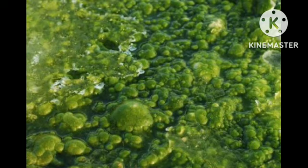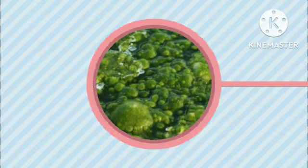Thallophyta is a type of non-flowering plant which does not have any stem, root, and leaves. For example, algae.